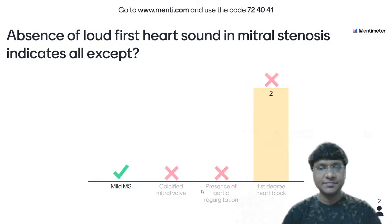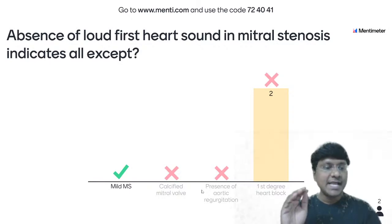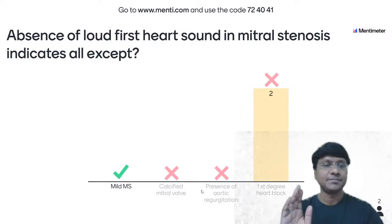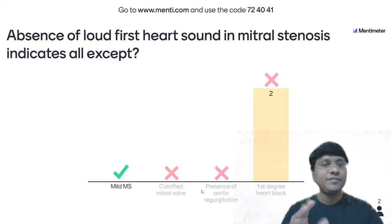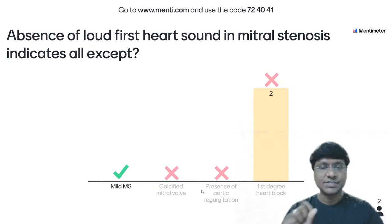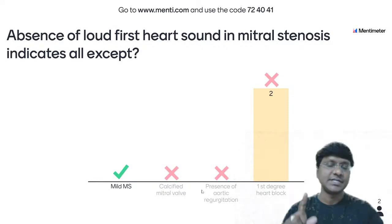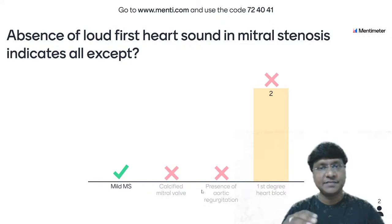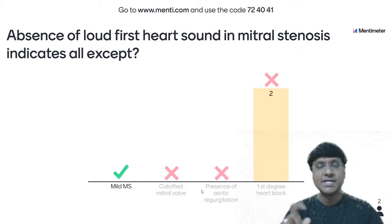All of you have answered incorrectly. The answer to this question is mild mitral stenosis. Listen to the question properly — absence of loud first heart sound in mitral stenosis indicates all except — meaning, in which condition do you have a loud first heart sound? In calcified mitral valve you will have soft S1. In aortic regurgitation, there will be increased LV end-diastolic pressure, reducing the gradient between left atrium and left ventricle, making S1 soft. In first degree heart block, they will also have soft first heart sound.